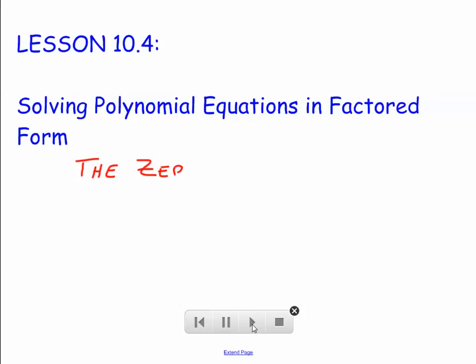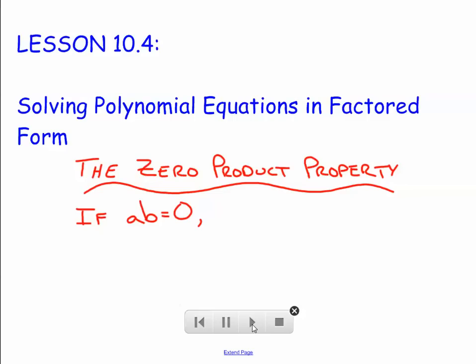To solve equations that are in factored form, we're going to use what we call the zero product property. The zero product property states that if a times b equals zero, in other words if you multiply two numbers together and you get zero, then either a or b is zero. The only way to multiply two numbers together and get zero is to have one of those numbers be zero. We're going to use that property to solve today's equations.